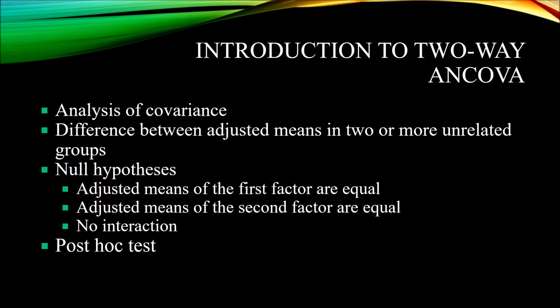To illustrate with an example, let's assume we have a group of participants and we want to expose them to a treatment. One independent variable, treatment, has three levels: cognitive behavior therapy, reality therapy, and existential therapy. We also want to determine if gender has an impact on our dependent variable, so gender is a second independent variable with two levels, male and female. The dependent variable is depression, measured by an instrument administered at the end of the study.